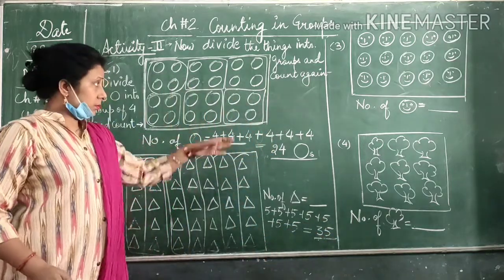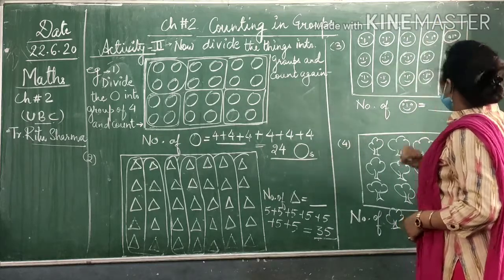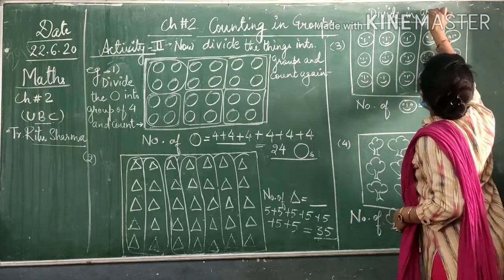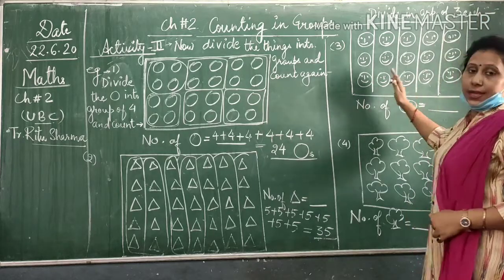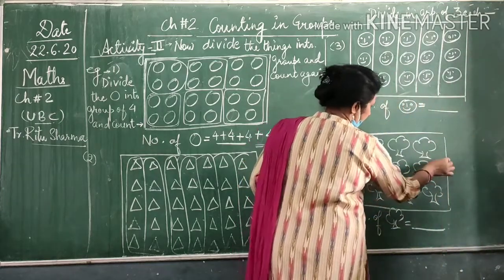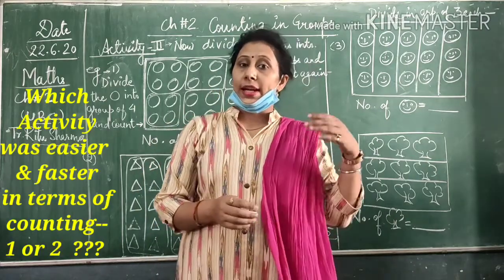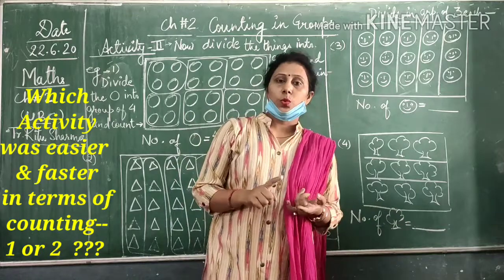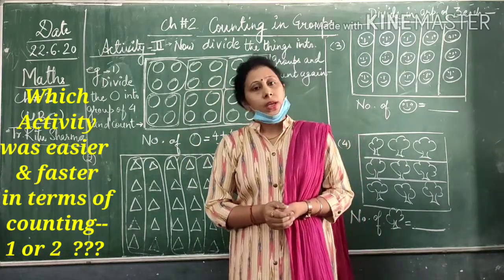So here also you will divide this into group of 3. Suppose 3, 3, 3, 3, 3, 3, 3. You can divide them like this. Divide them in the group of 3 and then count and write. And then you have to tell which method is easier. Activity 1 was easier or activity 2 was easier. Now write down the question over here. Write which activity was easier for counting. Counting in groups is easier or counting simply like all of them where they are given. This one is easier.